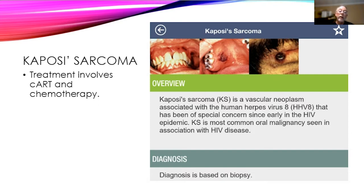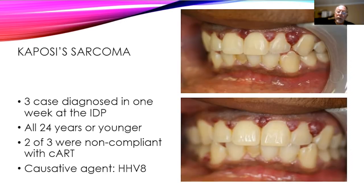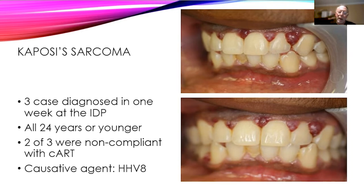Diagnosis of Kaposi's sarcoma is by biopsy. There is one lesion that looks similar — Bartonella or cat scratch fever — but we still recommend biopsy for a definitive diagnosis. Some lesions allow an excisional biopsy; for others you do a partial biopsy to get the diagnosis and let the primary care and oncology team proceed. For the papillary lesions, cleaning them — though messy — is actually one of the steps to reduce inflammation and get the person on the road to healing. Treatment involves antiretroviral therapy and chemotherapy.